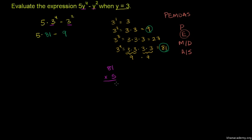8 times 5 is 40, so 5 times 81 gives us 405.